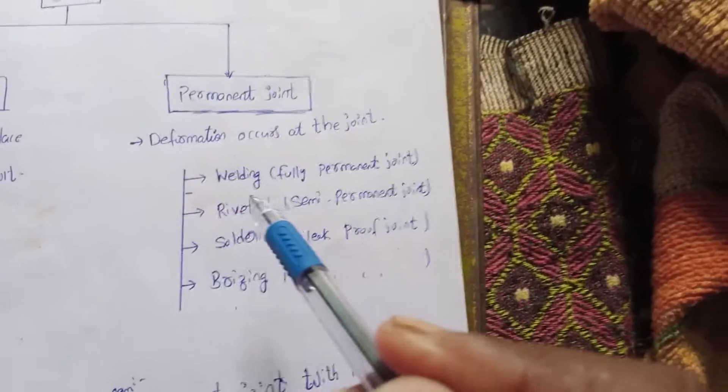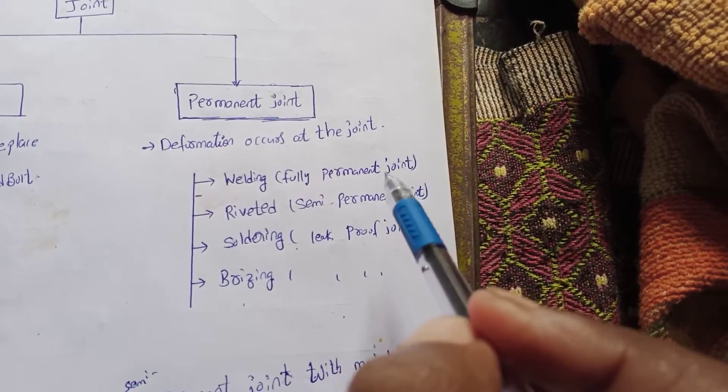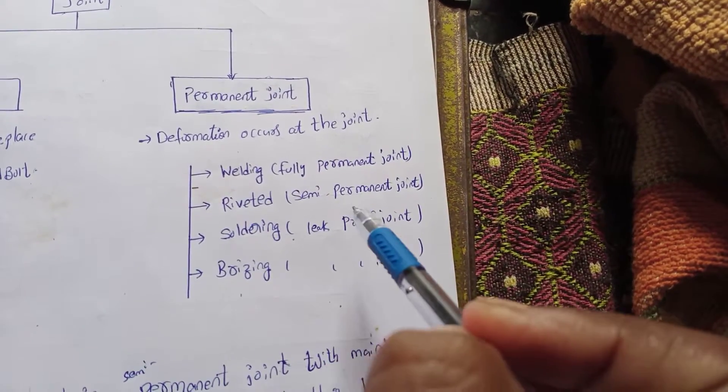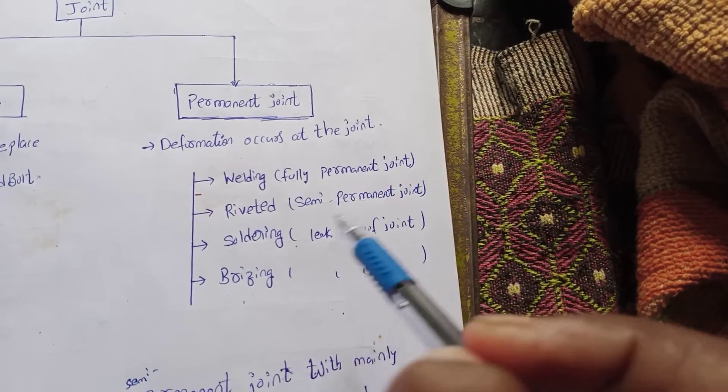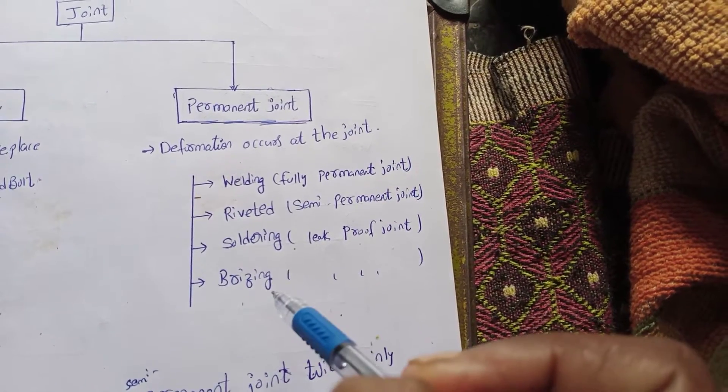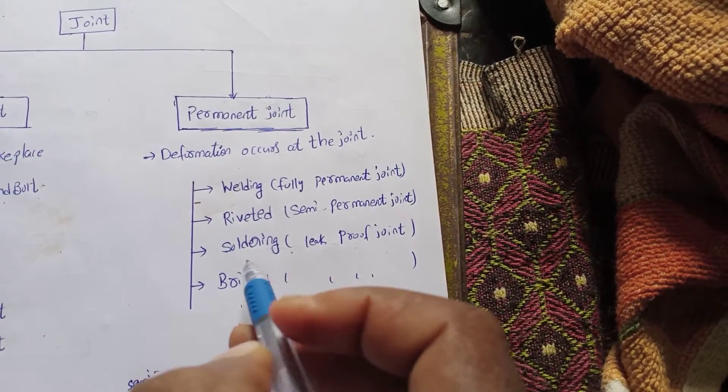In case of permanent joint: welding is a complete permanent joint. Next, riveted joint is a semi-permanent joint. Next one, soldering and brazing - these are leak-proof joints. Most are for mobile shafts.